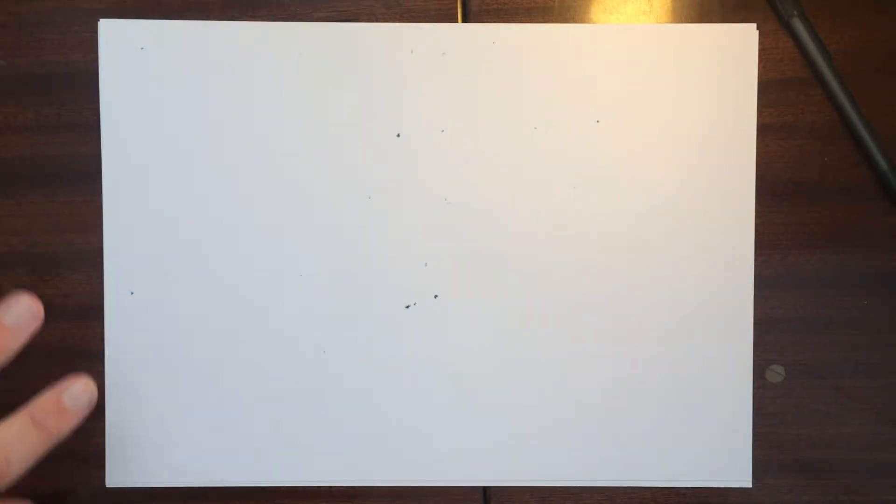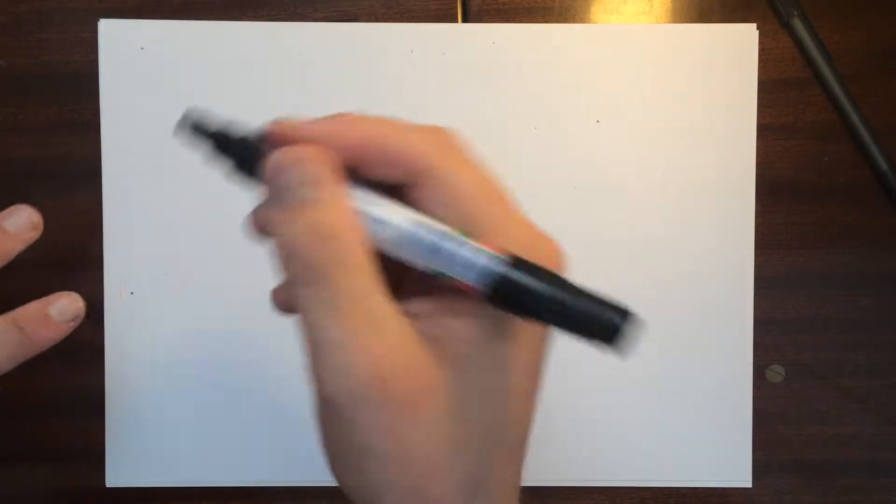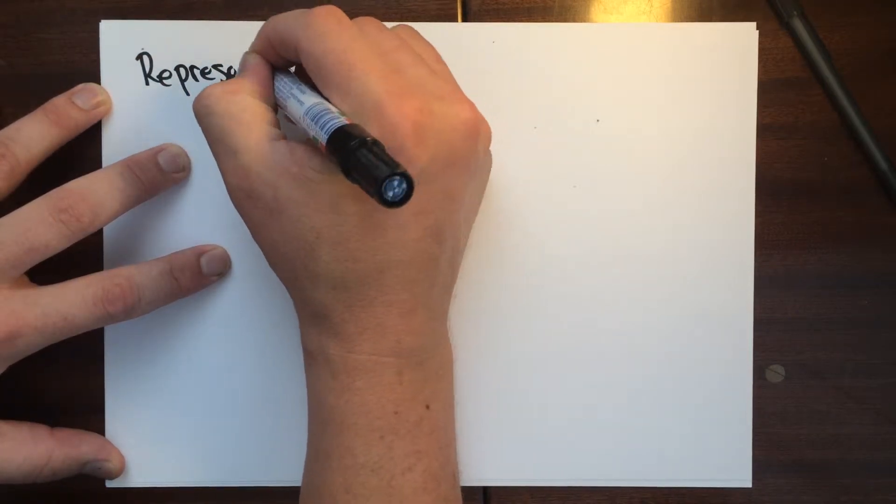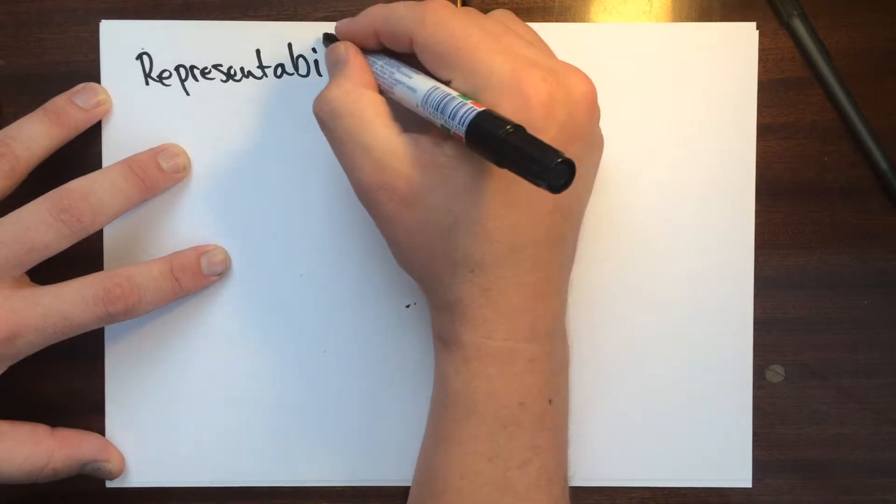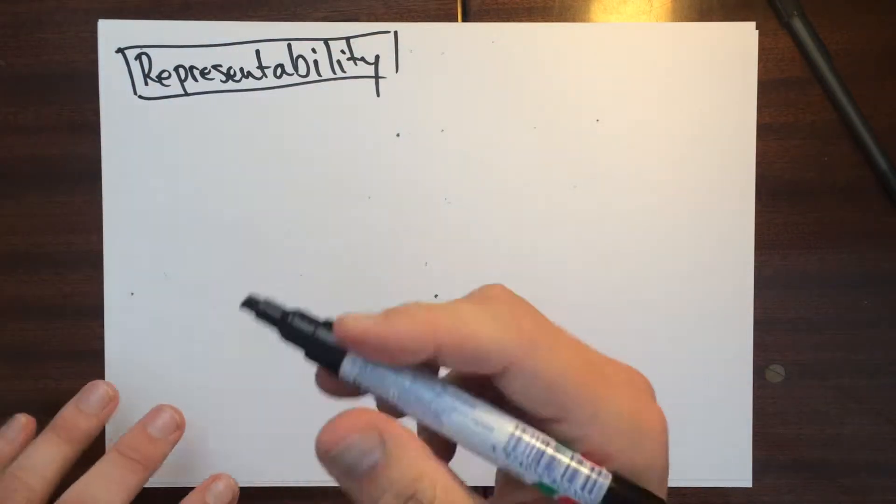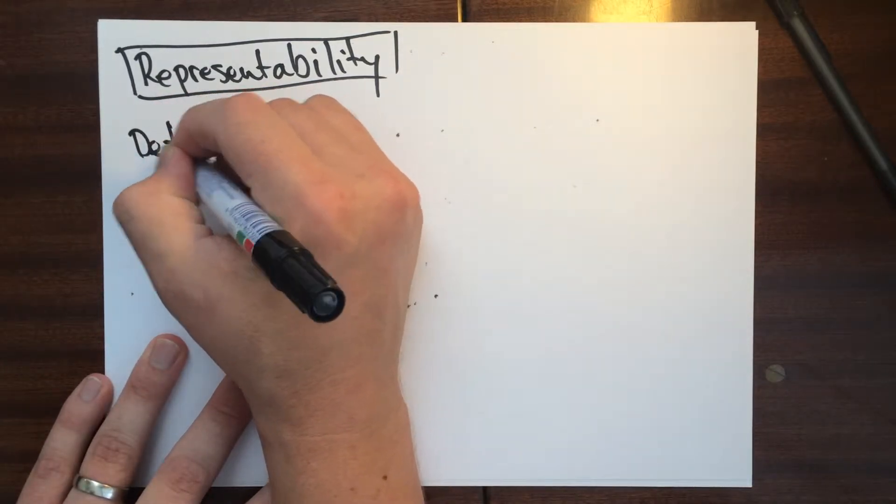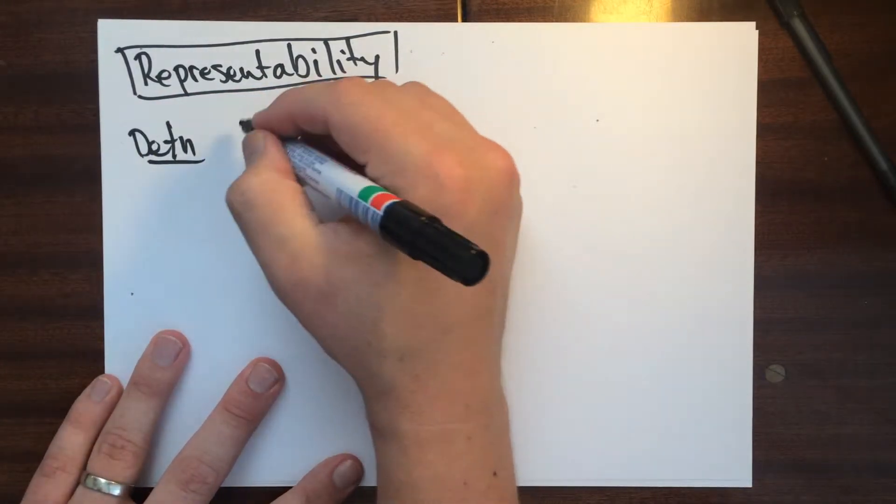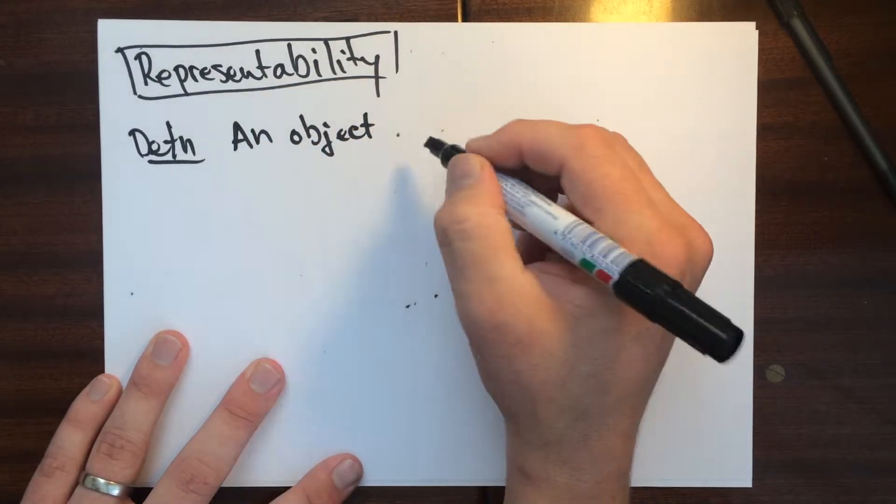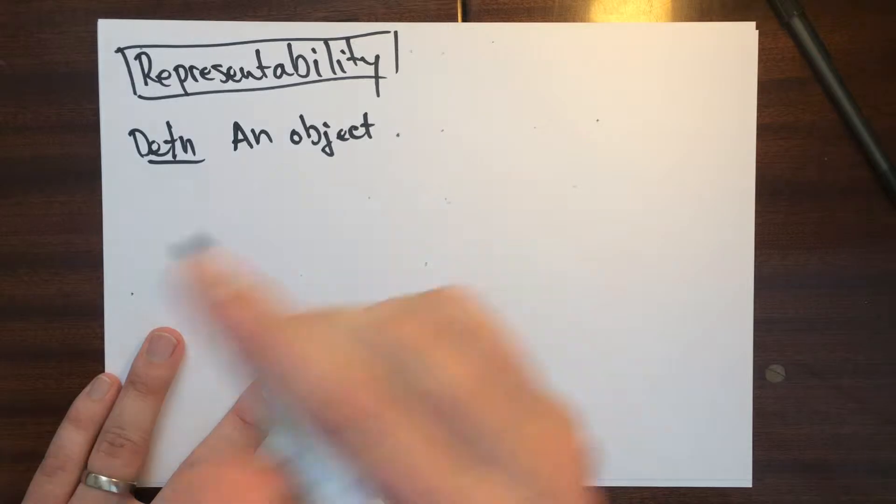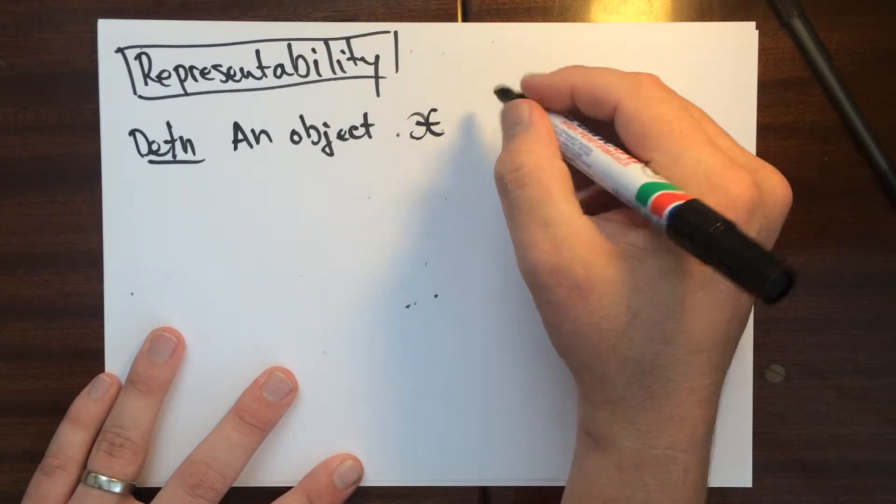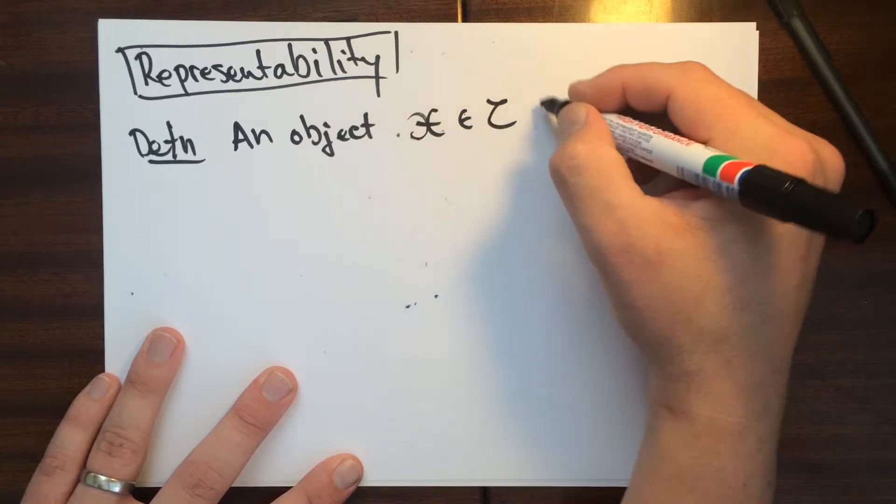So now I can give a definition. I need to define some representability. I need to do it for morphisms and for objects. So definition: an object, let's say, X in C is representable if...